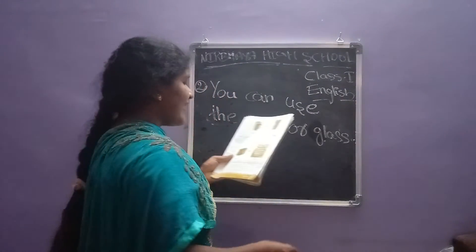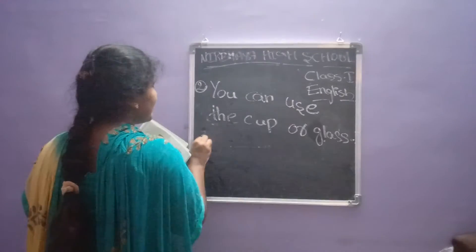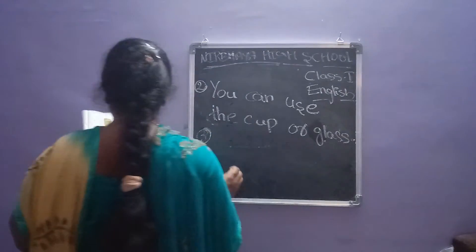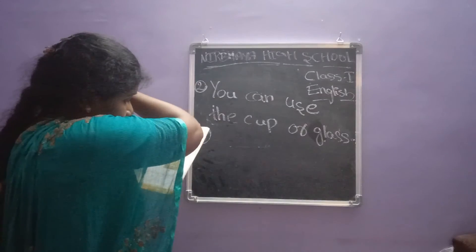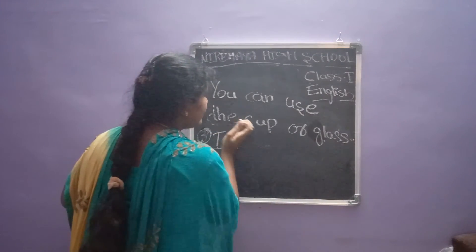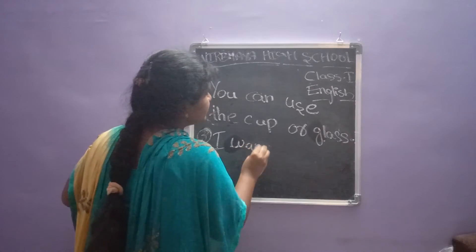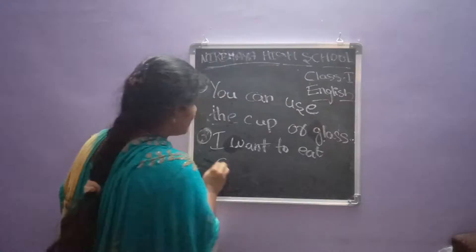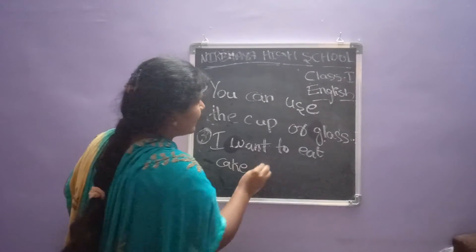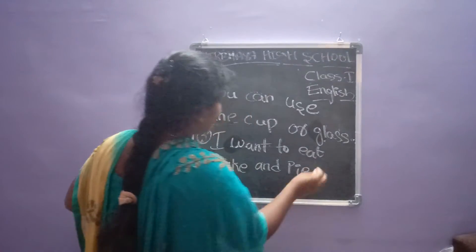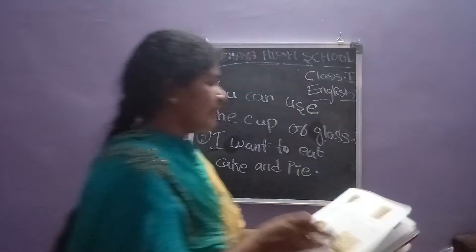Third one: cake and pie. By using cake and pie, we have to make the sentence. I want to eat the cake and pie. Write I in capital letter. I want to eat cake — C-A-K-E — and — A-N-D — pie — P-I-E. Full stop.